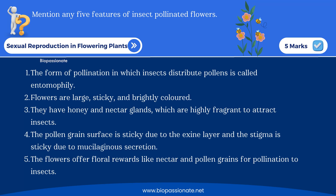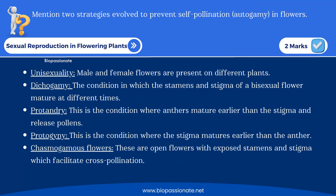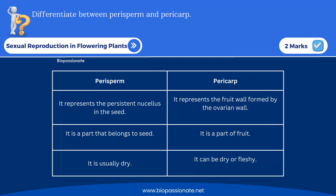Look at all these points and copy them in your notebook. Here is a question for two or three marks: mention two strategies to prevent self-pollination called autogamy in flowers. We have to write two or three points regarding autogamy. There is also a two-mark question: differentiate between perisperm and pericarp.